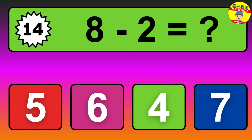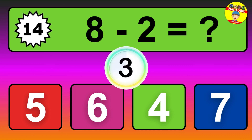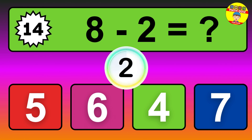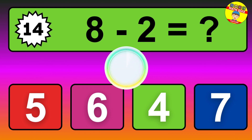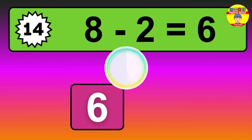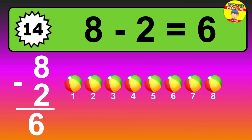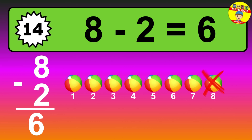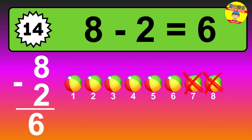Question fourteen: eight minus two equals what? The answer is eight minus two is six. Let's count it: one, two, three, four, five, six.